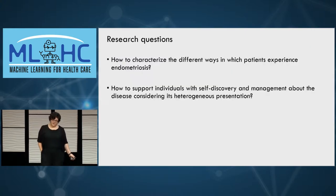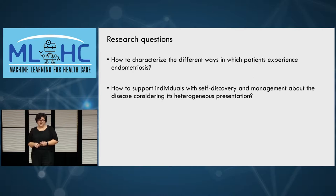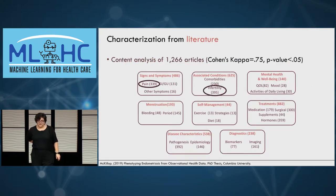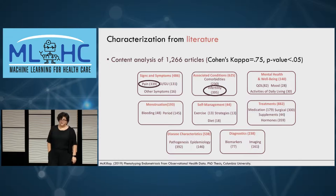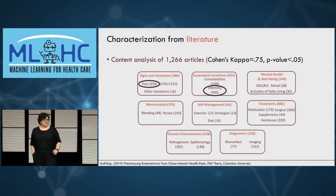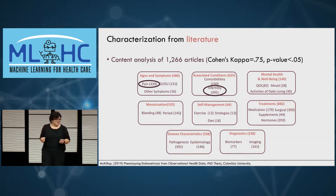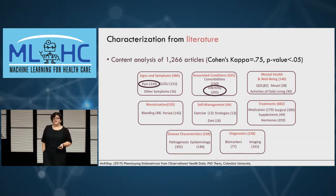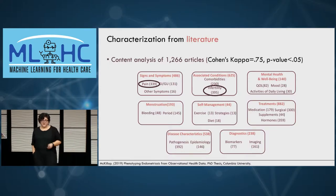There are two research questions we want to tackle: first, how do we characterize the different ways in which patients experience endometriosis? And second, how do we support individuals in managing their disease? My student Molly MacKillop did a content analysis of 1,200 articles about endometriosis. You should note that 1,200 articles about an entire disease is very little — if you typed 'diabetes' in PubMed you'd have way more — which really speaks to the lack of research on the disease. We found that the most frequent signs and symptoms mentioned were pain and infertility, with a few others.